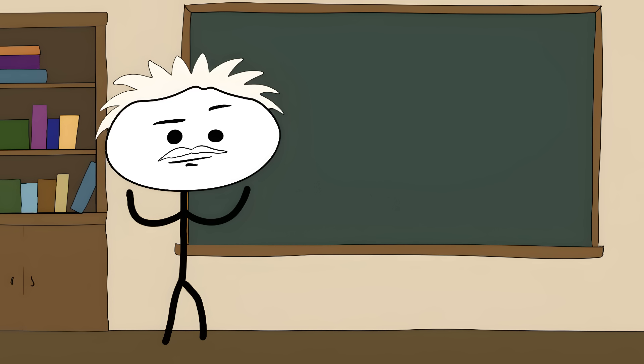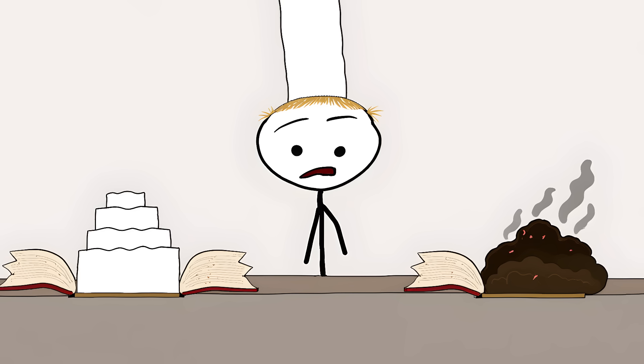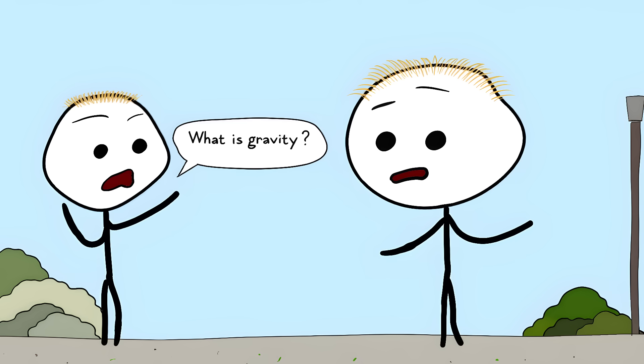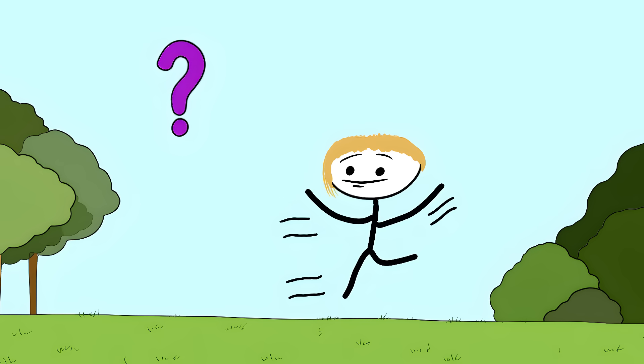Even Einstein's famous theory only tells us what gravity does, not what it actually is. Scientists still can't explain how it works with quantum particles. It's like having two perfect recipes that somehow make completely different cakes. Ask someone to explain gravity, and watch them stumble. They'll say things fall down, or mass attracts mass, but can't tell you why. We use it every day, but have no clue what it actually is. 2.